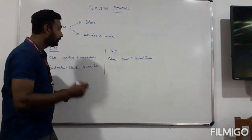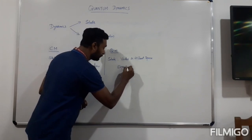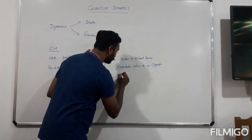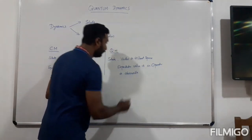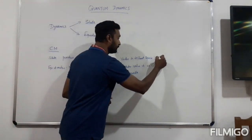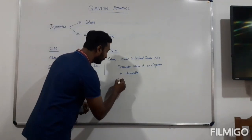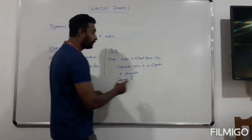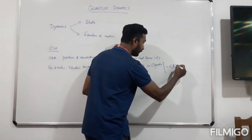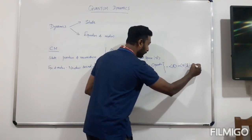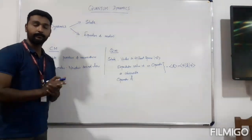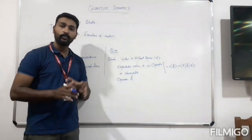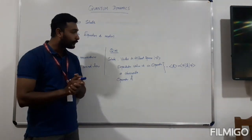So which is the observable quantity in quantum mechanics? The expectation value of an operator is what is observed. If the state of the system is represented by |ψ⟩ and the operator is represented by Â, then the expectation value is the inner product ⟨ψ|Â|ψ⟩. This expectation value is the observable quantity, not the state vector |ψ⟩. So it is convenient to write the equation of motion in terms of the expectation value rather than the state vector.